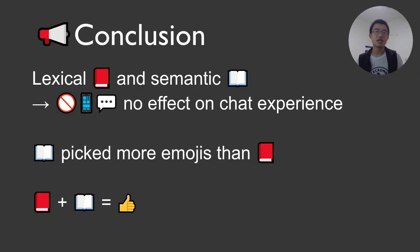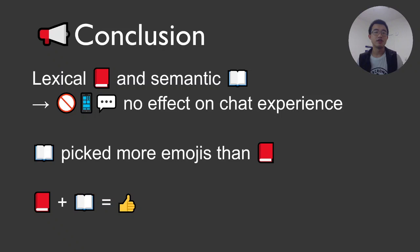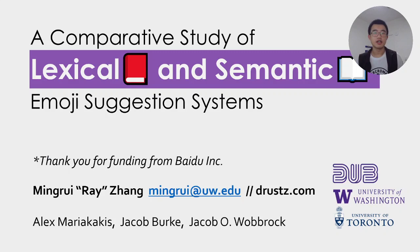To conclude, the emoji suggestion mechanism — including both lexical and semantic-based suggestions — does not affect the overall online chatting experience. It is the emoji itself, rather than the suggestion mechanism, that affects the experience. However, semantic-predicted emojis are perceived as more relevant and used more than lexical-based suggestions. From subjective feedback, participants liked both suggestion types for different reasons, so we advocate combining both suggestion levels in keyboard design to provide a better user experience. Thanks for listening. This work was partly supported by Baidu.